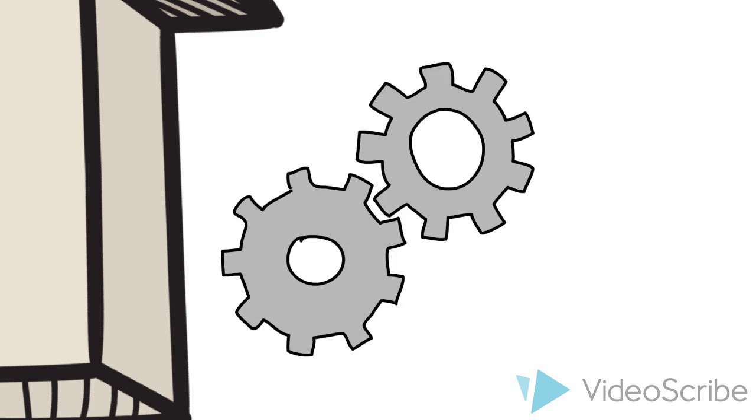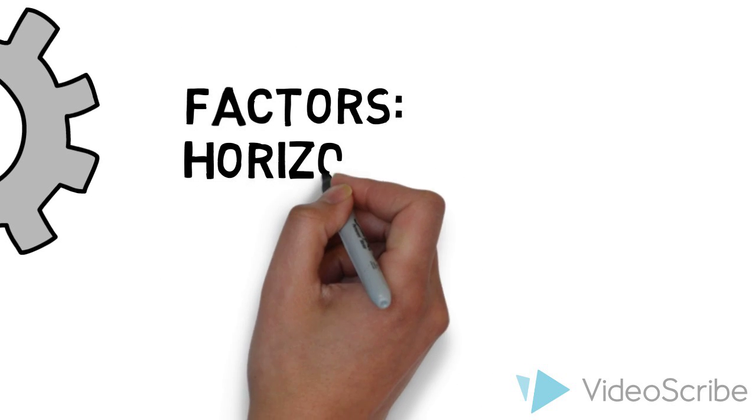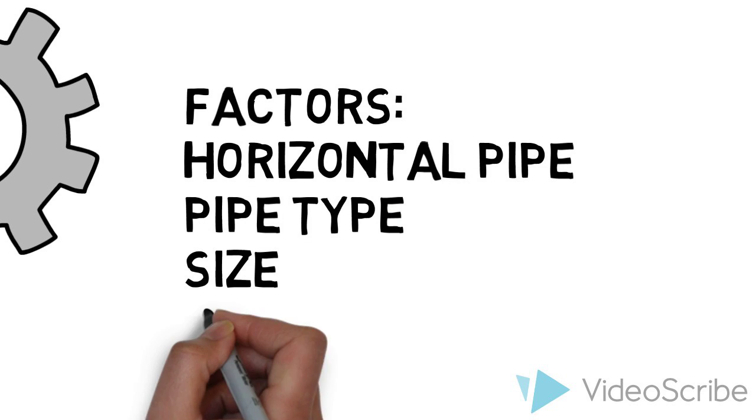Second, the friction losses, which is the loss of flow in a system due to friction created by factors like horizontal runs of pipe, pipe type, size, fittings, etc.